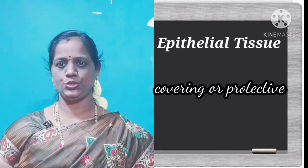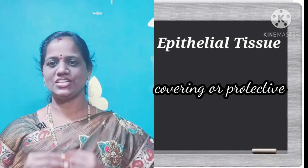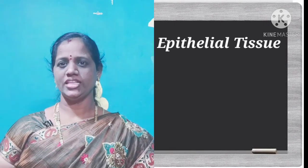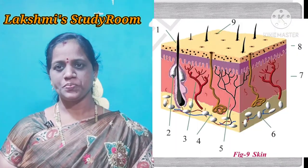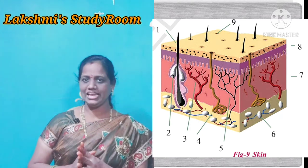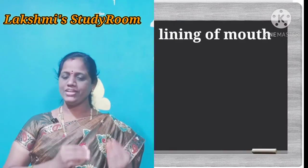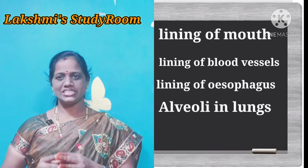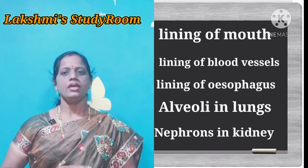The main function of epithelial tissue is protecting or covering internal and external parts of the animal body. Generally, epithelial tissue is found in the skin. If we see ourselves externally, most of the organ is skin. Skin has epithelial tissue. And the lining of the mouth, lining of the blood vessels, lining of the esophagus, and alveoli in the lung and tubules or nephrons in the kidney — all these organs have epithelial tissue.